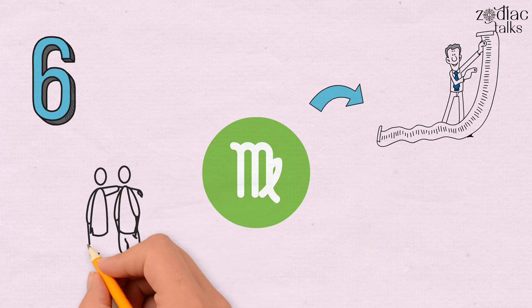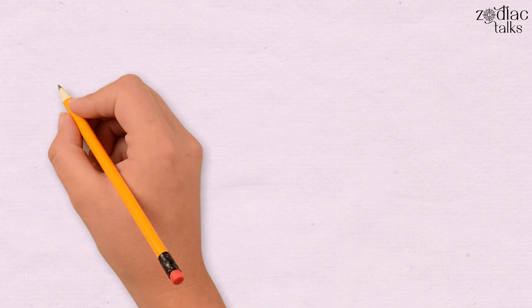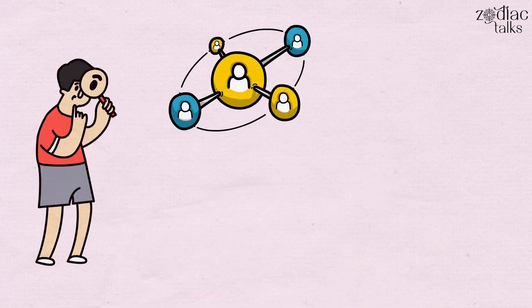It also reflects our relationship with service personnel and domestic animals. The Sixth House helps us recognize ourselves as part of a more extensive system.